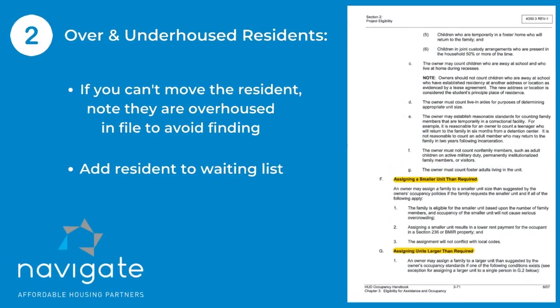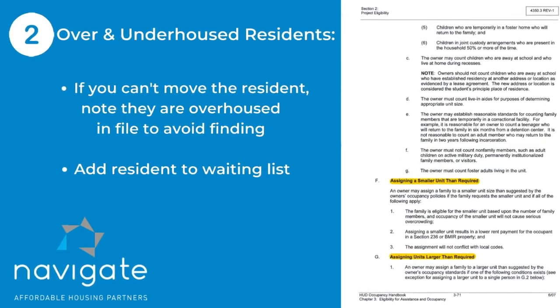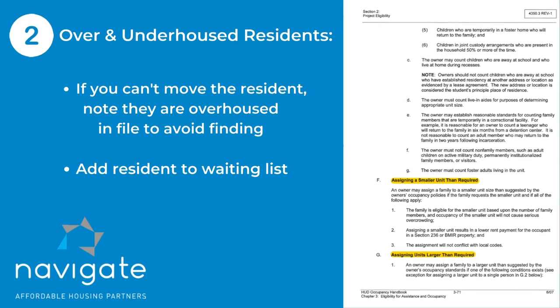The second tip is going to be on over and under housing. Don't forget that HUD does not pay for one person to be in a two bedroom, three bedroom, or four bedroom unit. This happens a lot with our RAD properties and sometimes even with properties that have public housing and they're managing it. If you cannot move the resident, at least make a note to the file that you realize the resident is over housed and you won't receive a finding.